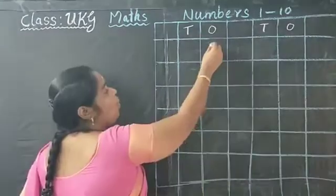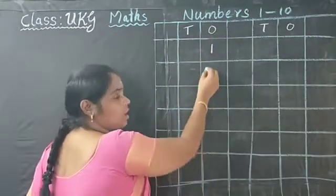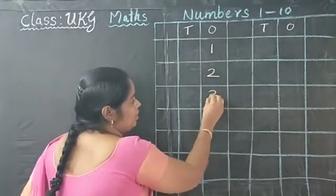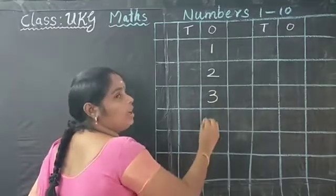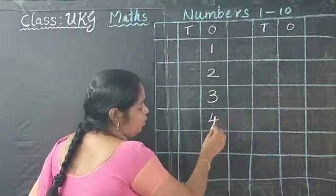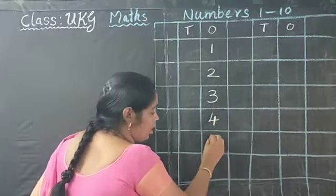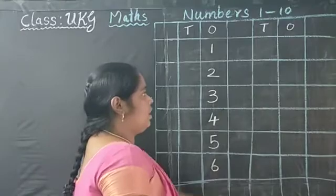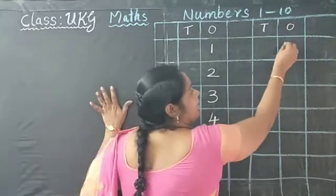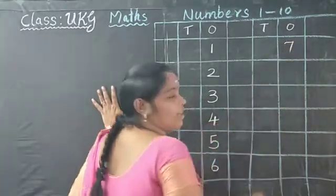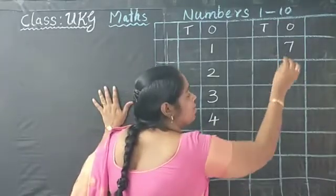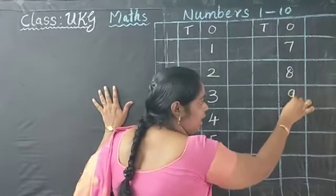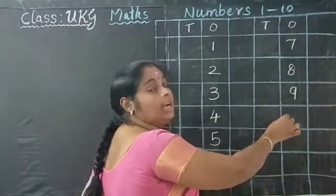Now 1. Next. Very good. 2. Next. 3. Good. 4. Next. 5, 6, 7. Right here, 7. Next. 8. Next. Very good. 9. Next. 10.